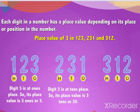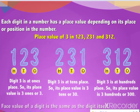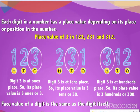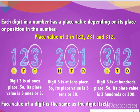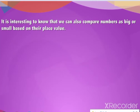In three hundred and twelve, digit three is at the hundreds place. So its place value is three hundreds, or three hundred. The face value of a digit is the same as the digit itself. In the above example, the face value of three in each of the numbers — one hundred and twenty-three, two hundred and thirty-one, and three hundred and twelve — is three.